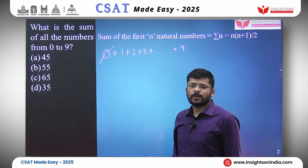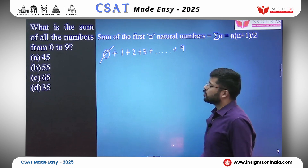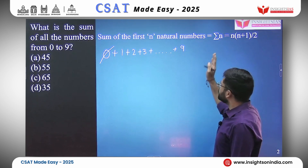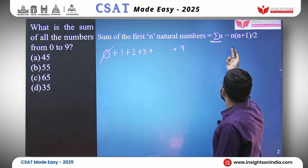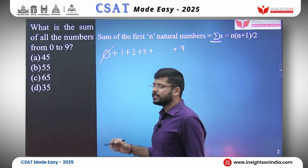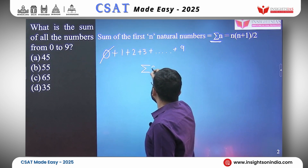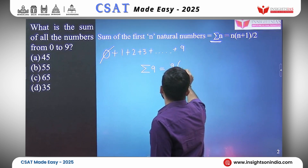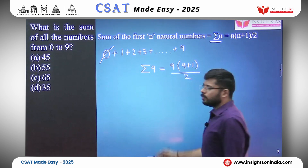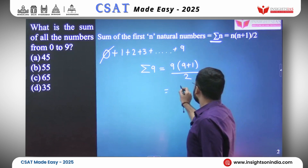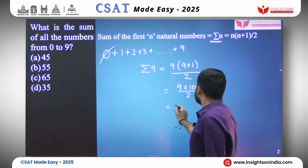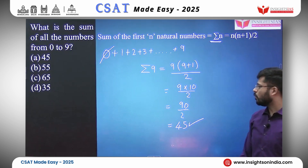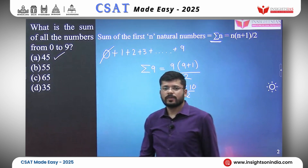0 does not matter because 0 plus anything is 0. The sum of the first n natural numbers — natural numbers begin from 1 — is denoted as summation n and the formula is n(n+1)/2. In this case, it would be summation 9, because we are summing the first 9 natural numbers (1 to 9). That gives us 9×10/2 = 90/2 = 45. So your answer is option A, 45.